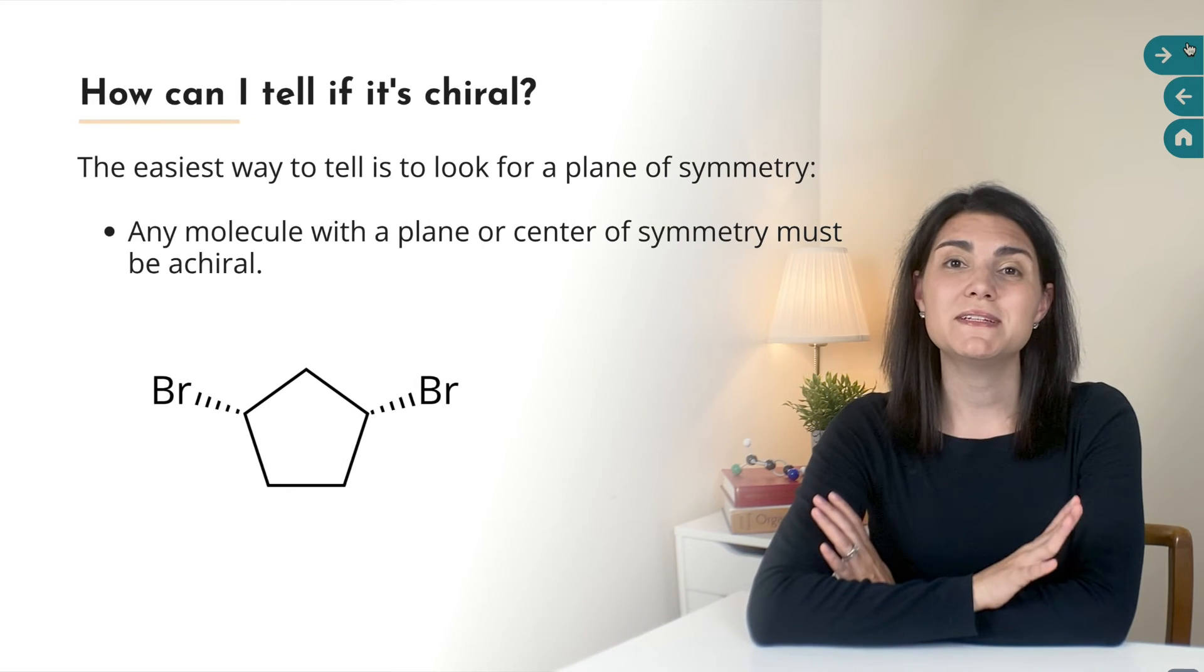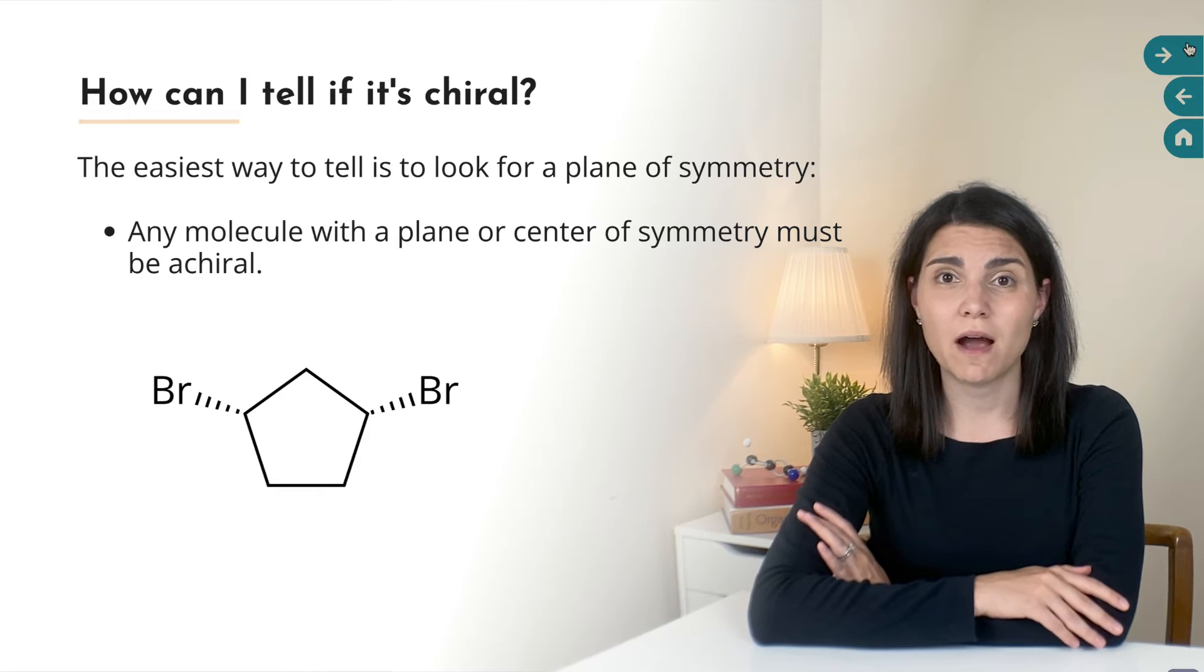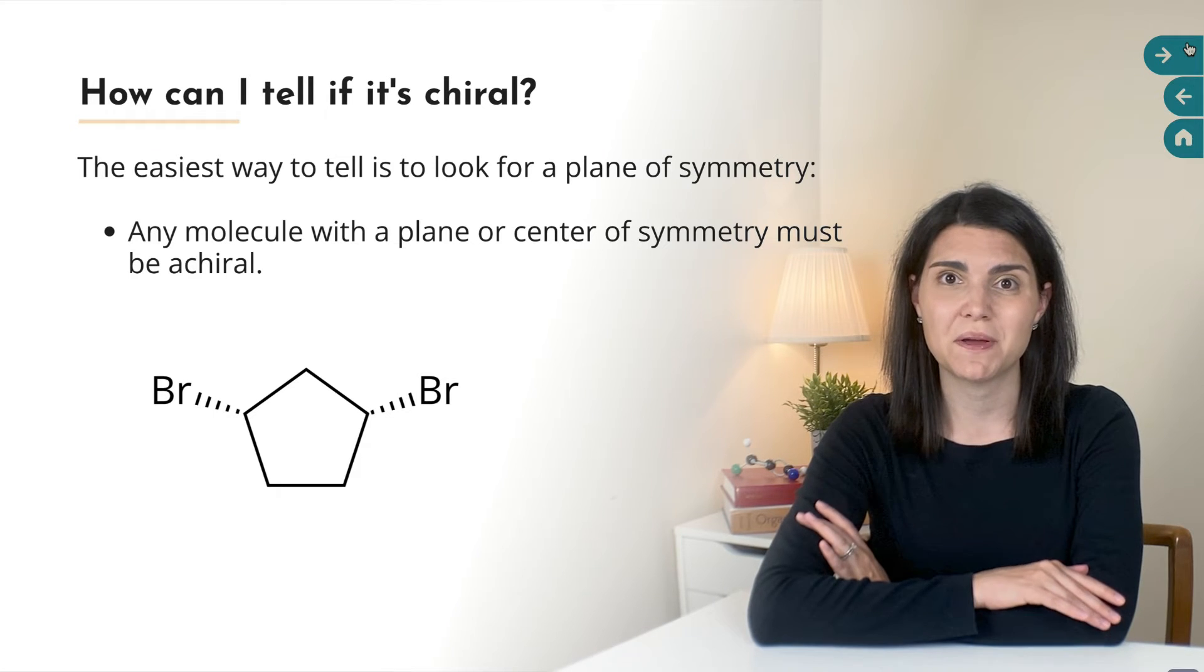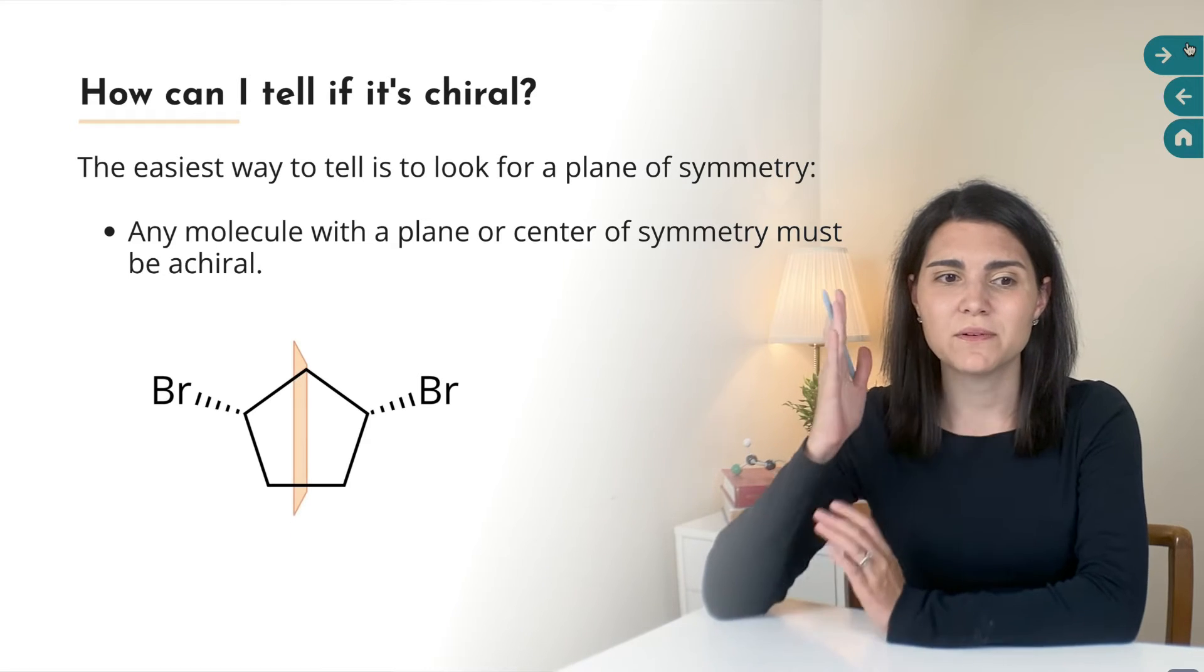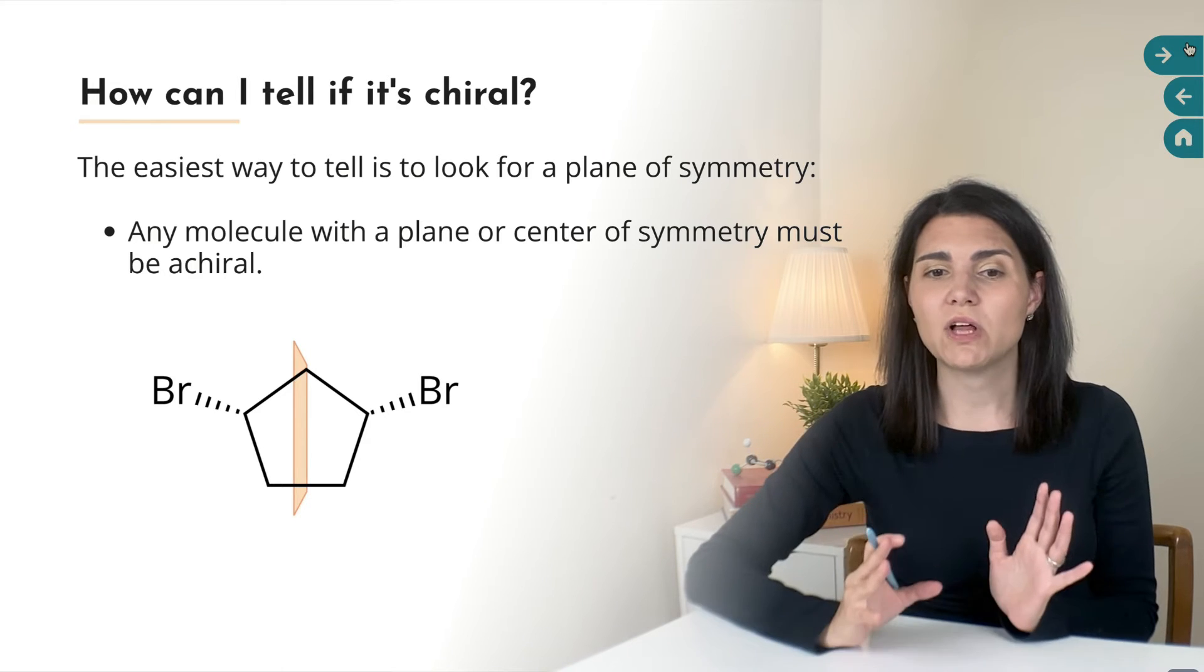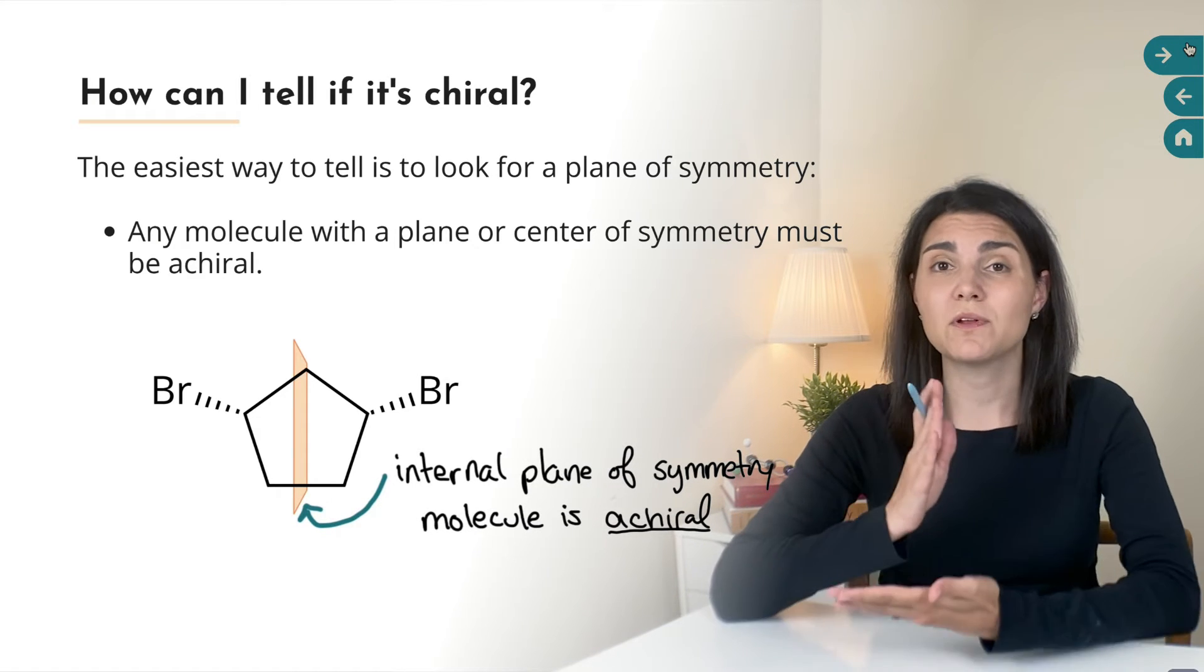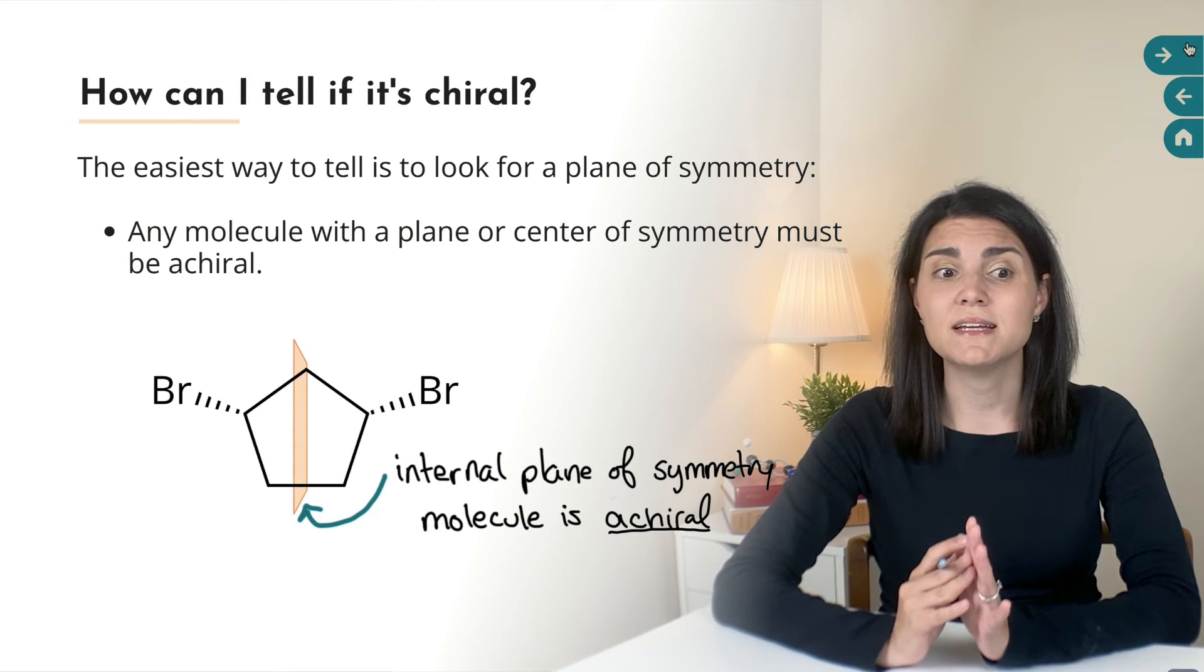A skill that you're going to need in order to pass organic chemistry is to be able to tell right away whether a molecule is chiral or achiral and the quickest way to do this is to check whether the molecule has an internal plane or center of symmetry. Here's an example of an achiral molecule and we can imagine cutting this molecule in half through this plane in the middle and on either side you have an identical half of the molecule so this is called an internal plane of symmetry and because we can do this because this molecule has that internal plane of symmetry we can say with 100% certainty that it is achiral.